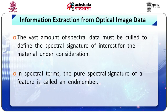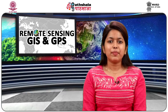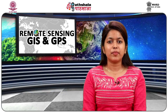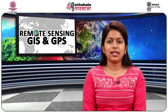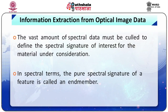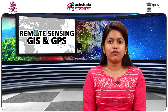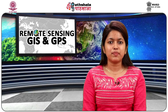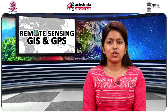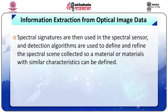We will now discuss information extraction from optical image data in hyperspectral remote sensing. The ability to derive information from spectral data is the key to any successful collection. The vast amount of spectral data must be analyzed to define the spectral signature of interest of the material under consideration. In spectral terms, the pure spectral signature of a feature is called an end member. One method of collecting pure end members is from a laboratory spectroradiometer focused on a single surface or material. These signatures are then used in spectral detection algorithms to define and refine the spectral scene collected.